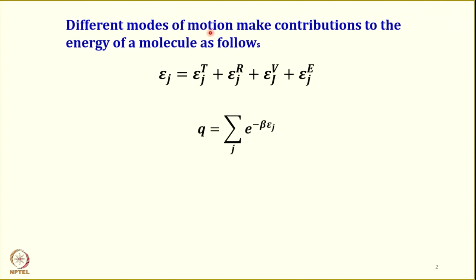If it is a diatomic molecule, now the molecule can rotate and the molecule can vibrate. Therefore, the rotational contribution and vibrational contribution can also come in. So, different modes of motion make contributions to the energy of a molecule as follows: for any j-th state, the energy of a molecule equals the translational energy plus the rotational energy plus the vibrational energy plus the electronic energy, plus any other type of contribution.